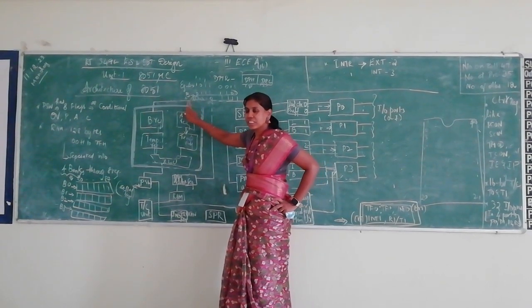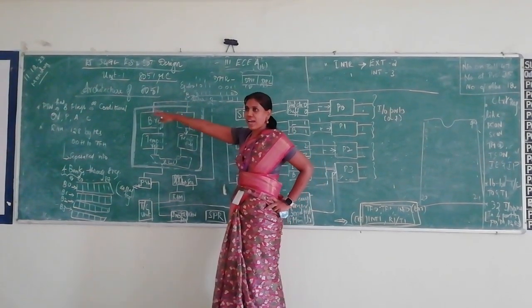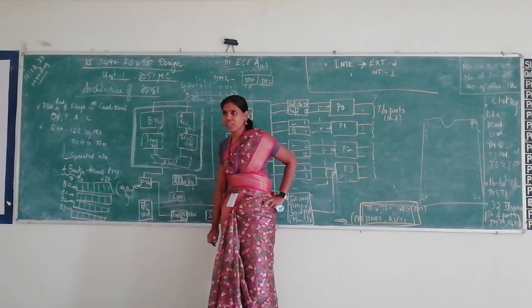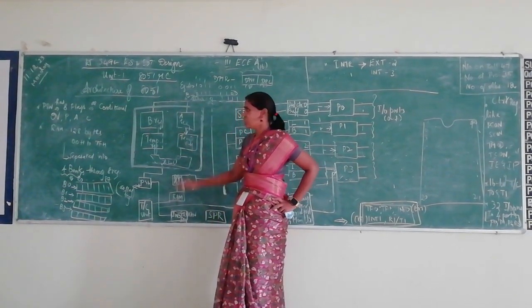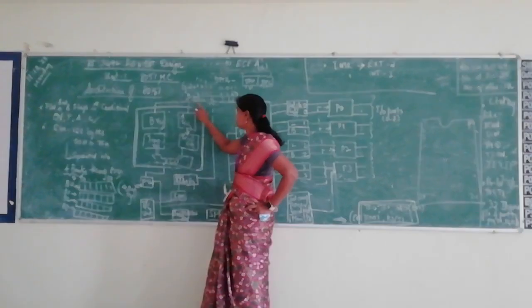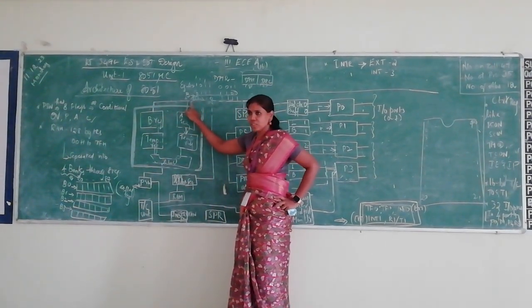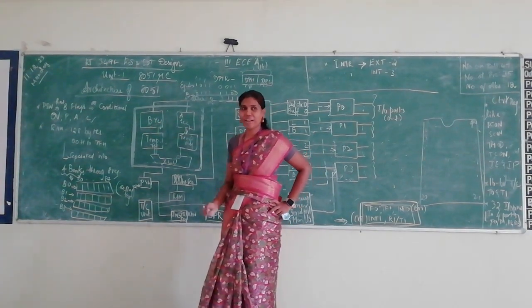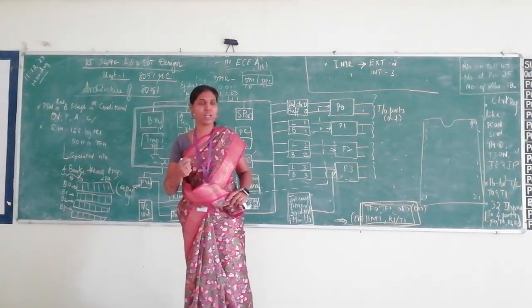So what happens is that the status of the flag will be 2, it will be the carry flag for overflow card. So obviously it takes you to use of the carry flag. Because your carry flag is supposed to be 1. So what is a flag? A flag indicates the status of the operation. Already I am saying that.